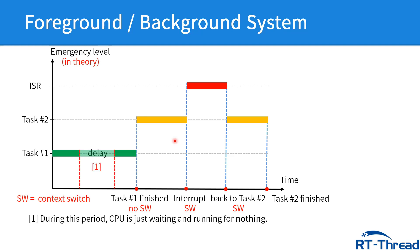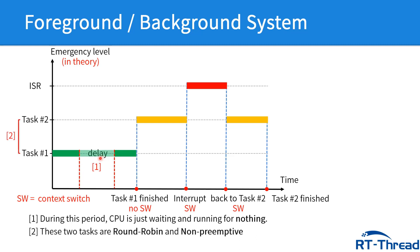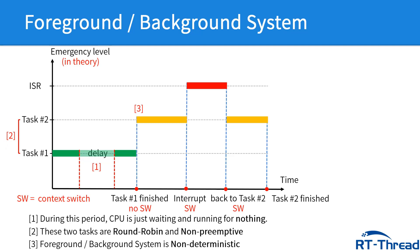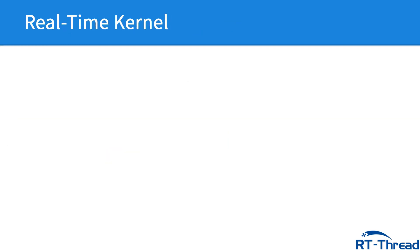Number 1: during this period, the CPU is just waiting and running for nothing. Number 2: the two tasks are round-robin and non-preemptive. Number 3: the foreground-background system is non-deterministic. In this case, we need to use a real-time kernel to improve.